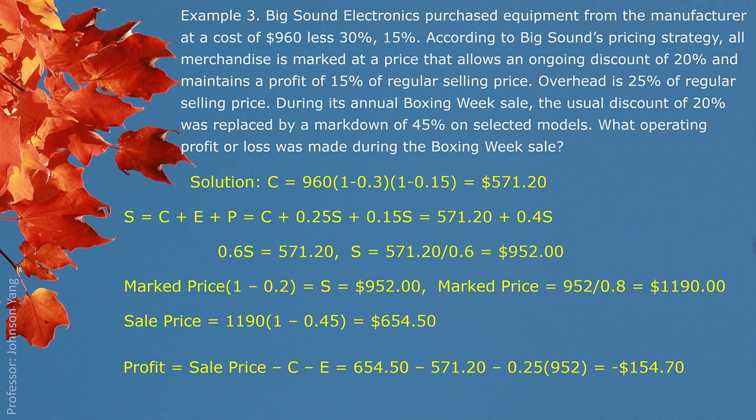Profit = sale price minus cost of buying minus operating expenses = $654.50 - $571.20 - $238 = negative $154.70. So during the boxing week sale, they do not make a profit — they still lose money on each item sold.